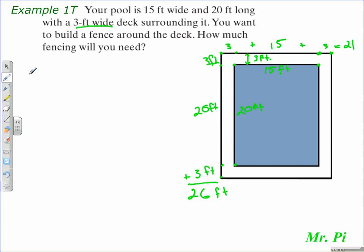So we apply the perimeter formula: perimeter is equal to 2 times the length plus 2 times the width. We substitute the values in. We calculated the length being 26 feet, so 2 times 26 feet plus 2 times the width which is 21 feet.